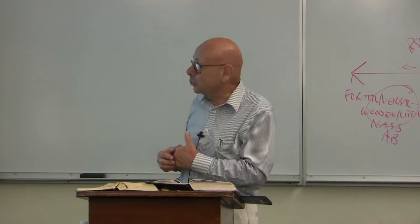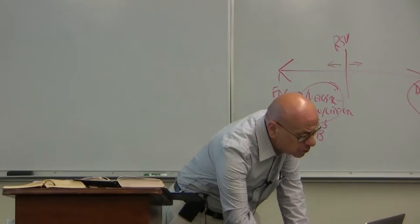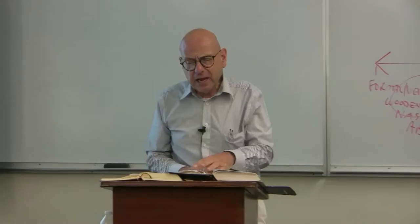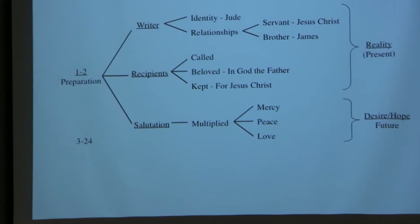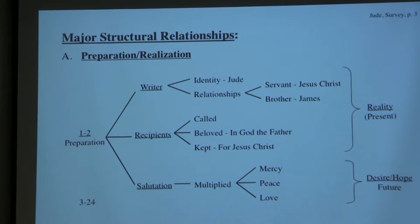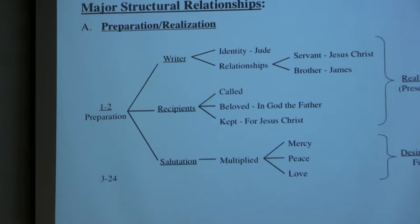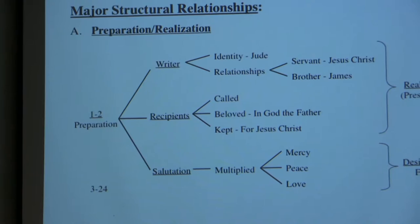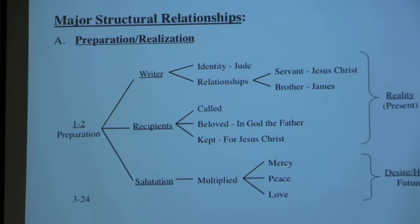In terms of major structural relationships, verses 1 and 2, being a salutation, provide preparation or realization — background according to which we are to understand the rest of the book of Jude. It involves background in three elements: first, background regarding the writer — his identity is Jude, described in terms of relationships as a servant of Jesus Christ and the brother of James. Second, the recipients are described in three ways: they are called, beloved in God the Father, and kept for Jesus Christ.